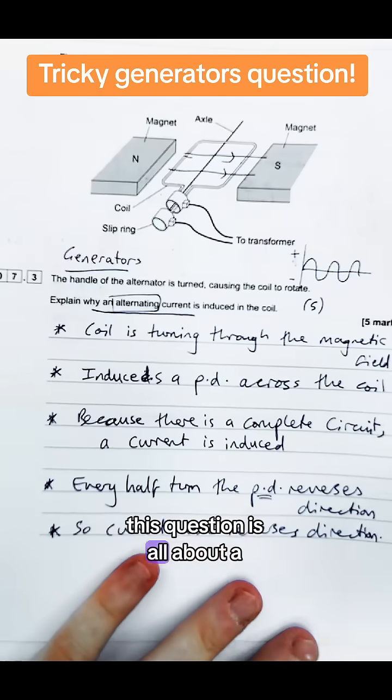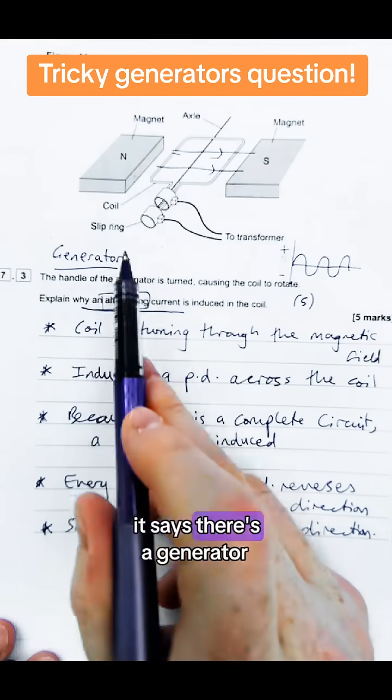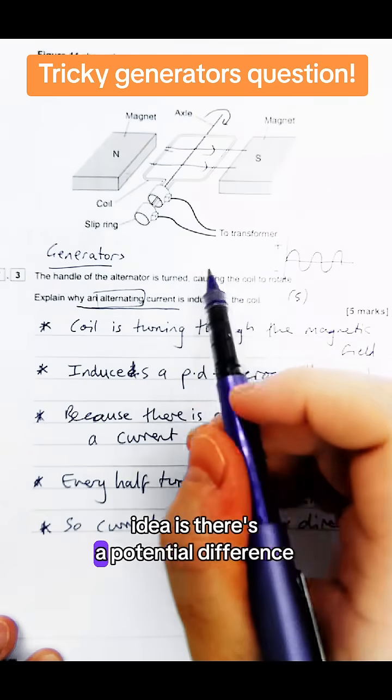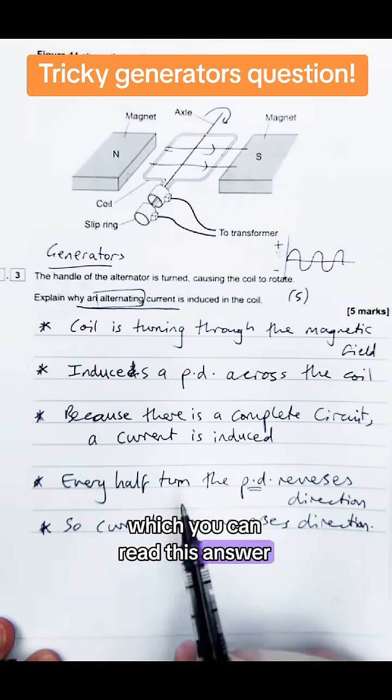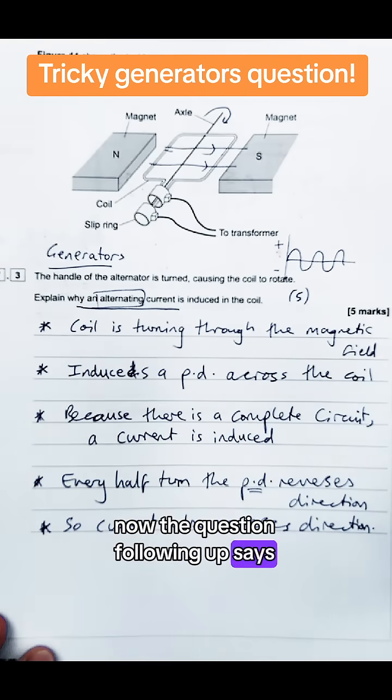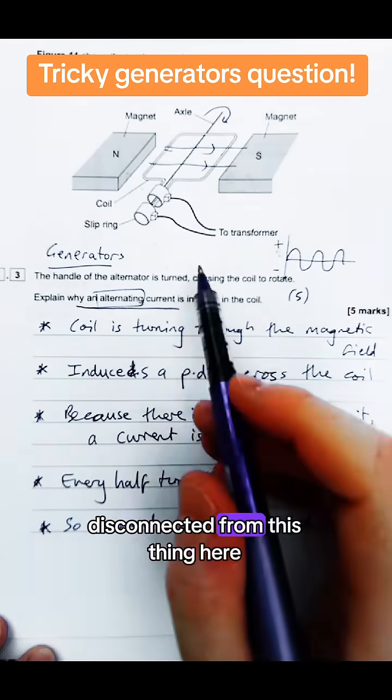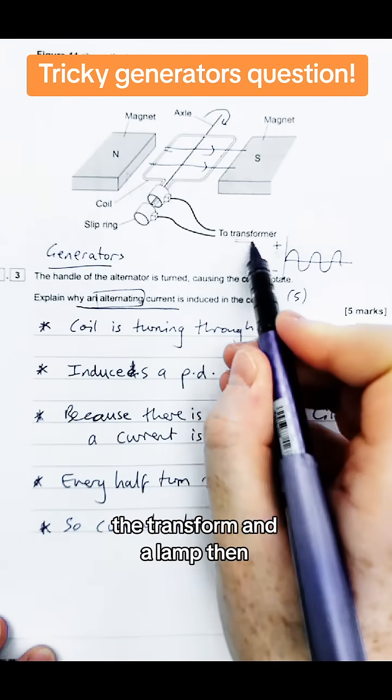So this question is all about a generator. Now I answered this question in a previous video. It says there's a generator, you turn a handle and the idea is there's a potential difference induced which you can read this answer here which is a perfect five mark answer. Now the question following up says the alternator, so this whole thing here is disconnected from this thing here, the transformer and the lamp.